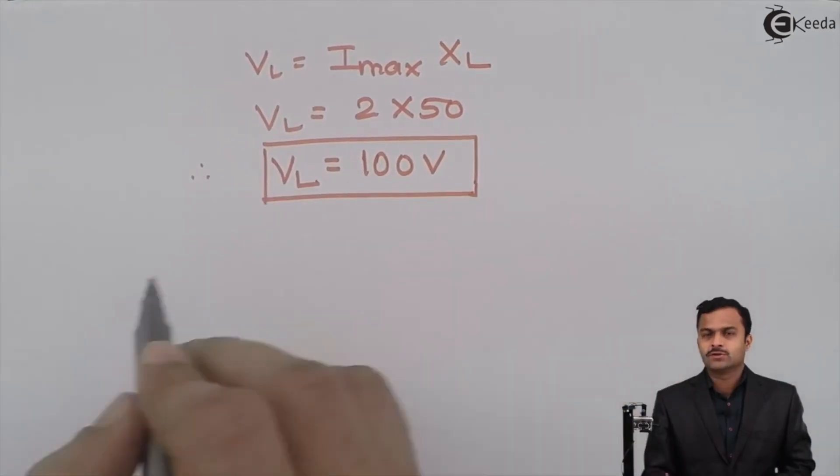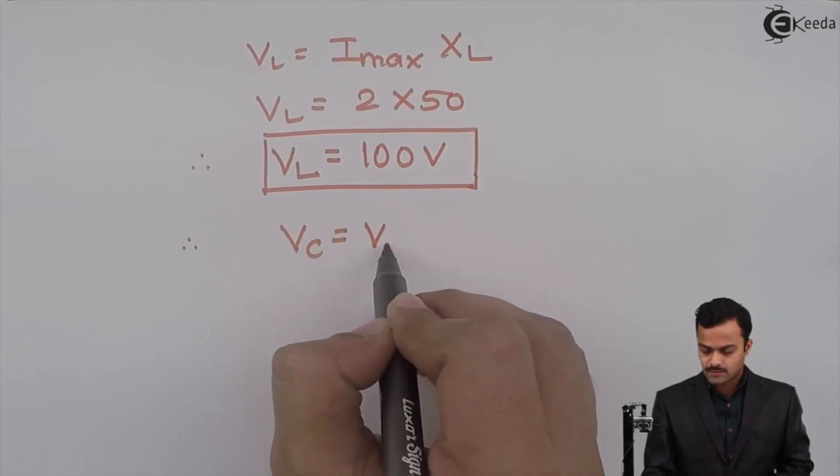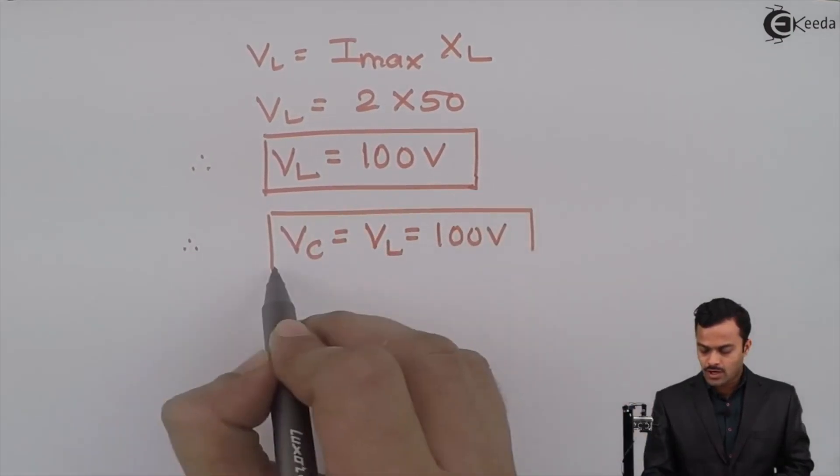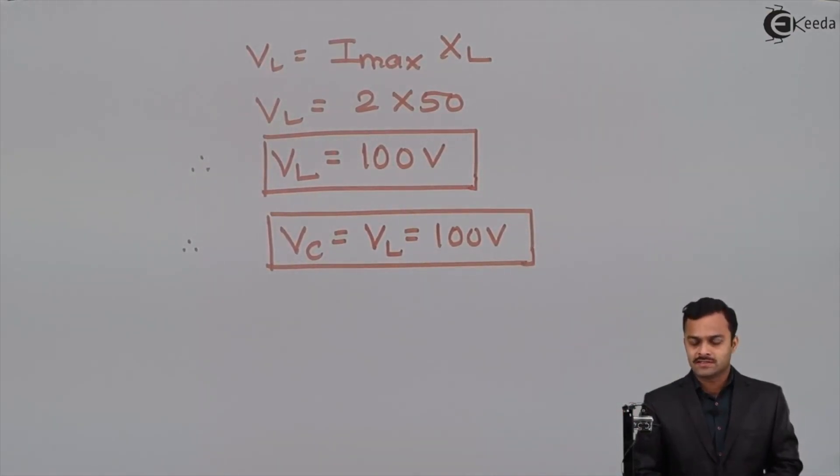Being a resonating circuit, same will be the voltage across capacitor. We got voltages across all the elements. Across resistance, it is 10 volt. Across inductor, it is 100 volt and across capacitor, it is also 100 volt. Thank you.